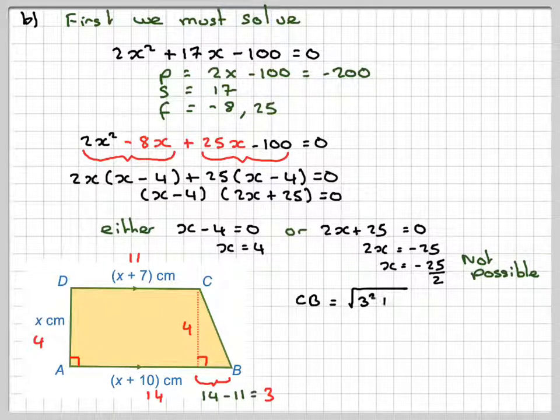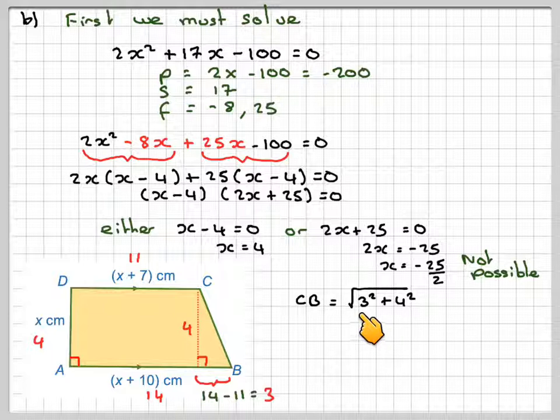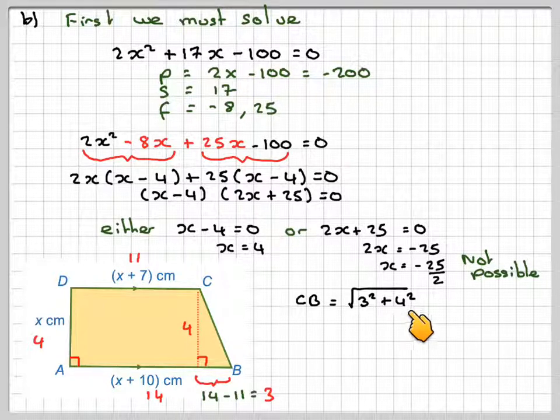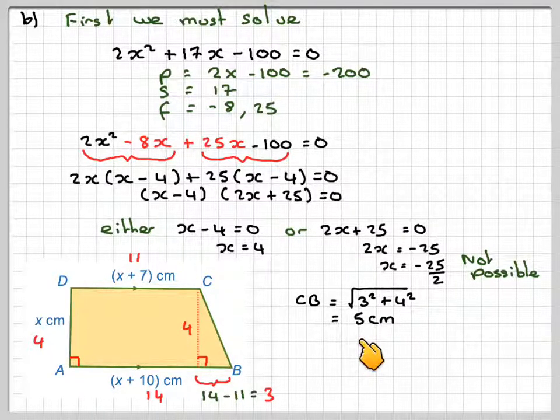What we've got here is a 3, 4, 5 triangle, or we can work out CB by using Pythagoras, square root of 3 squared plus 4 squared, which is equal to the square root of 25, which is 5 centimetres. So, this length here is 5 centimetres.